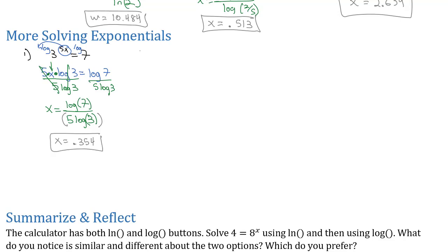Let's try another one that requires a little more algebra to get to the answer. Let's try 4 to the 2x minus 3 equals 17. We used log last time — we can use either one, so let's use ln this time. We'll use natural log of both sides, and that's going to grab the exponent and move it out front as a factor.